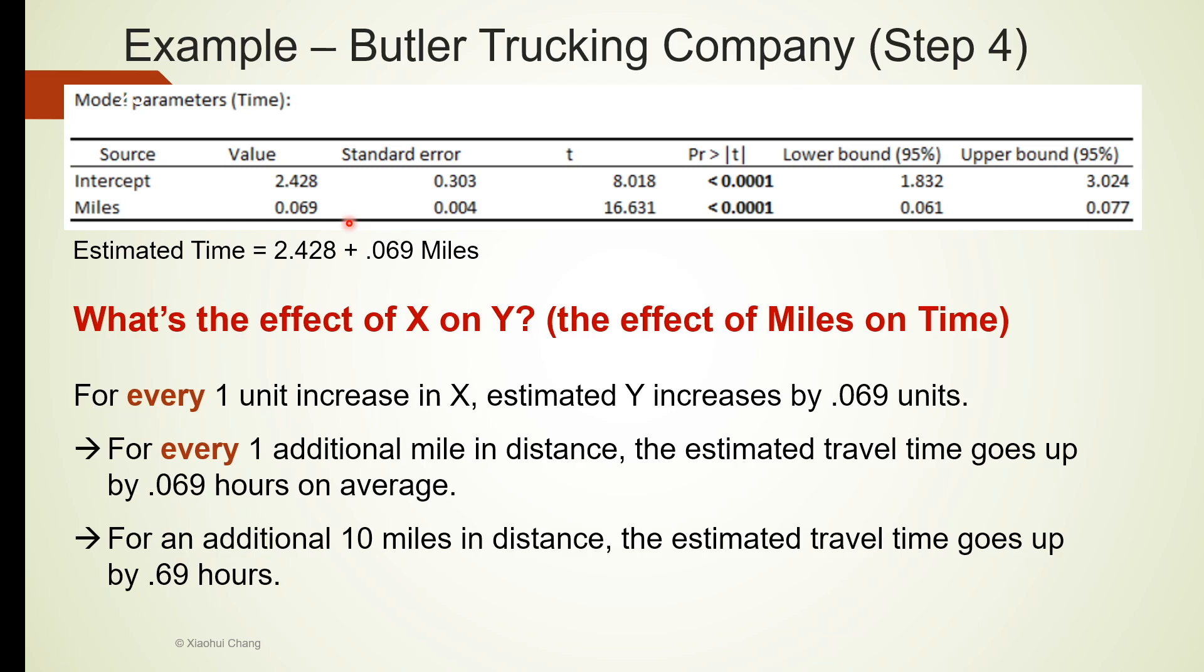How could we interpret this number using words? This is related to the interpretation of the slope coefficient we discussed earlier. For every one additional mile in distance, the estimated travel time goes up by 0.069 hours on average. If there is an additional 10 miles in distance, that would be 0.069 multiplied by 10, that's 0.69 hours, about 41 minutes.